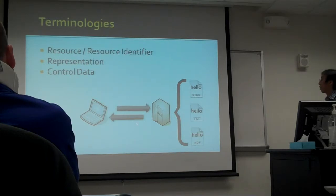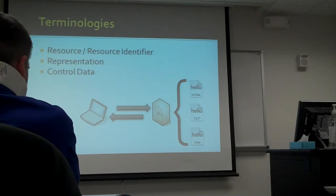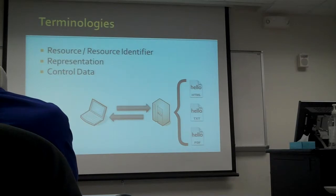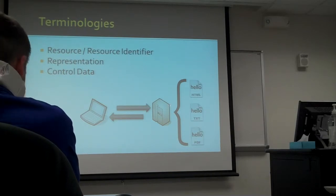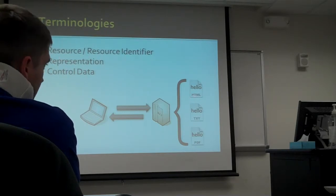Here is an example. The resource 'hello' consists of three kinds of representations: hello.html, hello.txt, and hello.pdf. When the client sends a request to the server to access the resource, the control data will determine which representation the client wants.